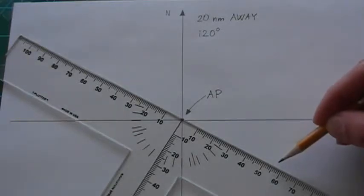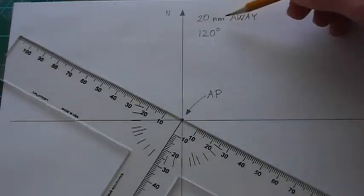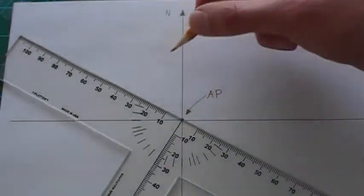Then we can mark our intercept distance 20 nautical miles, but not toward 120 but away from it.